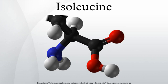With a hydrocarbon side chain, isoleucine is classified as a hydrophobic amino acid. Together with threonine, isoleucine is one of two common amino acids that have a chiral side chain.